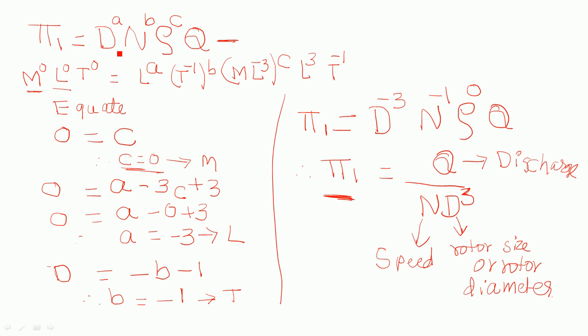This is how we derived the pi 1 term. In pi 1 term we should write repeating variables and Q term, remember this. If you like this video, subscribe to the channel and like this video, thank you.